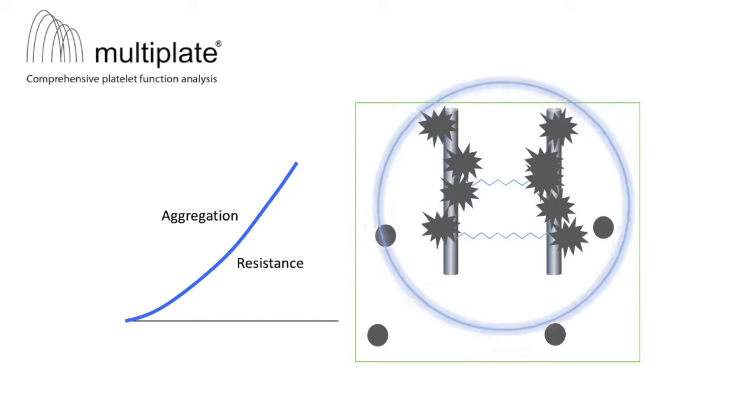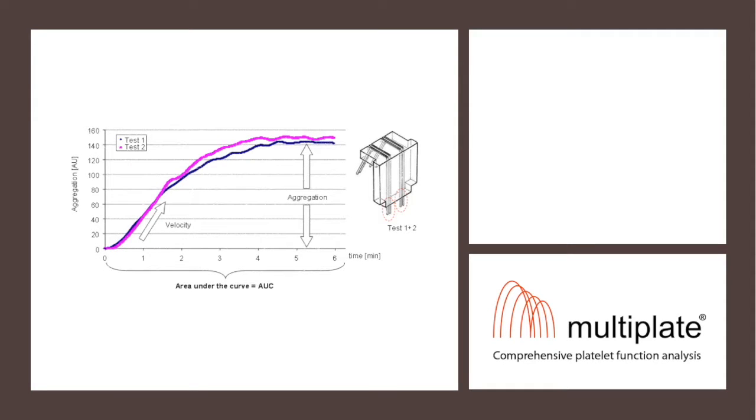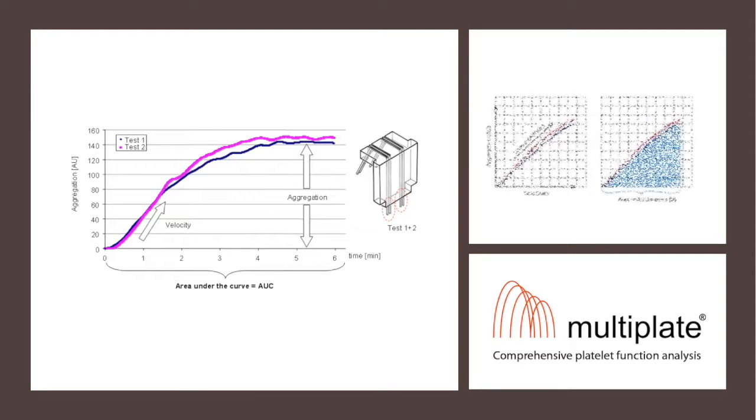The results are expressed by the values referred to as the area under the curve, or aggregation units. The duplicate sensor wires allow for automated quality control of measurements by comparison of the two simultaneously recorded results.